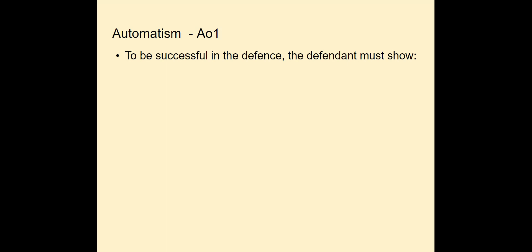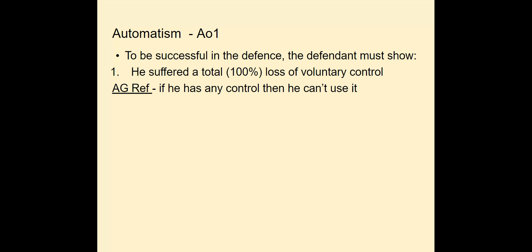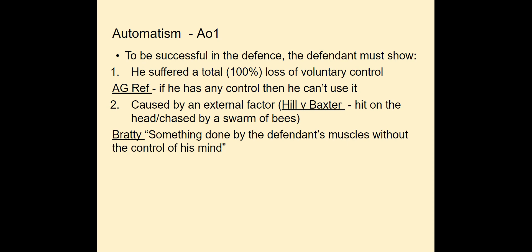We're going to focus on automatism using the state, explain, apply model. To be successful you must show that the defendant suffered a total, 100% loss of voluntary control - you explain this with the case of the Attorney General's Reference. If the defendant demonstrates any level of control then he can't use it. It must be caused by an external factor, as in Hill and Baxter, where examples given are being hit on the head by a stone or chased by a swarm of bees - not something which originates from within.